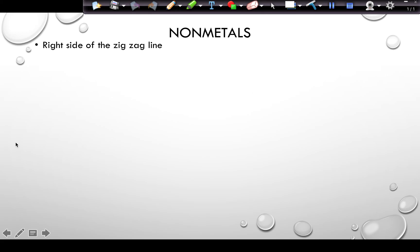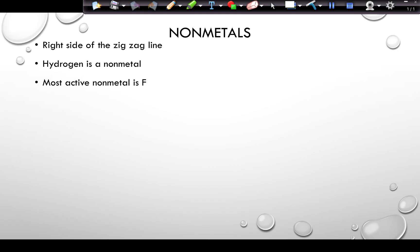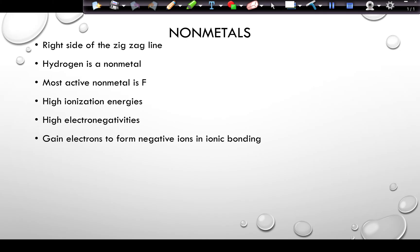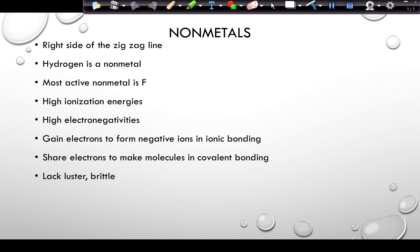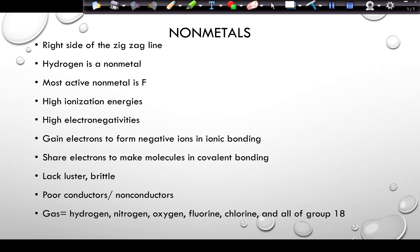Non-metals are elements to the right of the zigzag line, including hydrogen — remember hydrogen is a non-metal. The most active non-metal is fluorine. Non-metals tend to have high ionization energies and high electronegativities, meaning they gain electrons to form negative ions in ionic bonding or share electrons in covalent bonding. They lack luster, are brittle, and are non-conductors. Hydrogen, nitrogen, oxygen, fluorine, and all of group 18 are gases; bromine is a liquid; the remaining non-metals are solids.